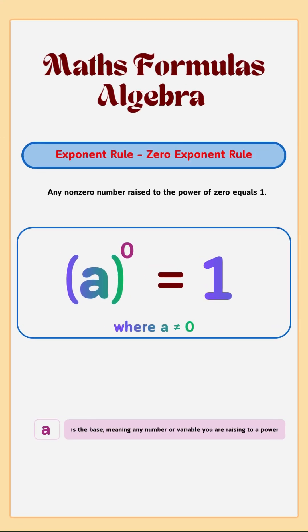Zero Exponent Rule: Any non-zero number raised to the power 0 equals 1.